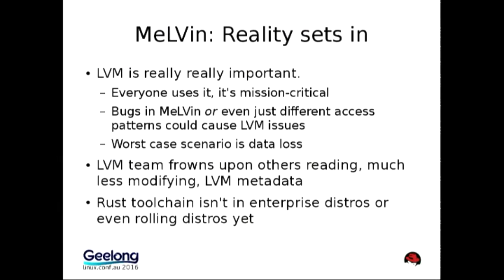But it was not to be. LVM is really, really important — mission critical. The idea was perhaps thinking a little too far out of the box. Certainly the LVM team was like, 'What?' LVM expects other instances of itself to take those locks and interact with those data structures. But it wasn't designed as a public API — the metadata structure is documented in a general FYI kind of way, but that's not an API. The locking mechanism is not a public API either, so it was a little dicey.